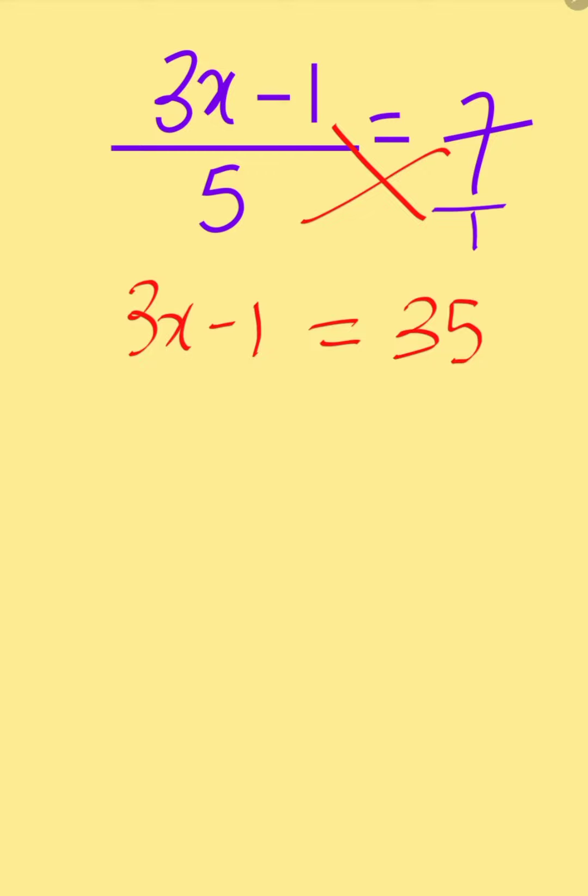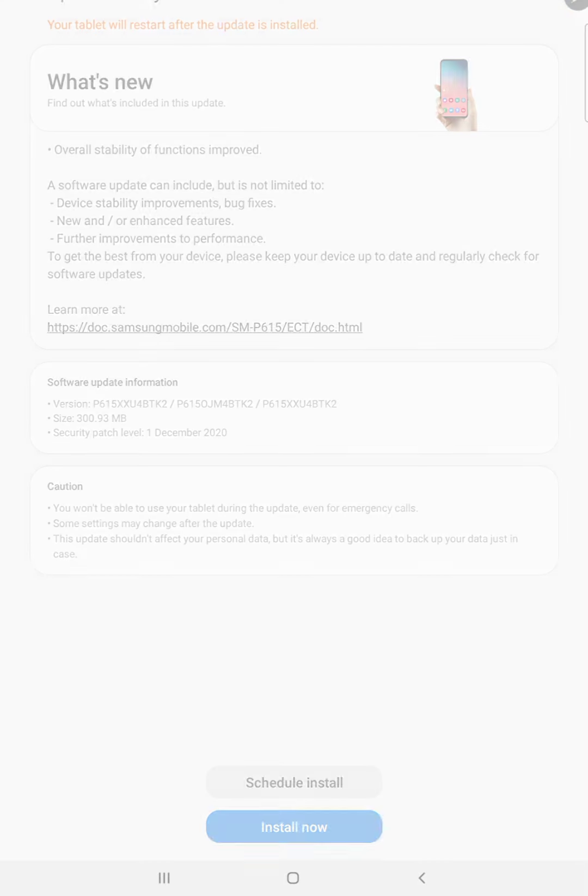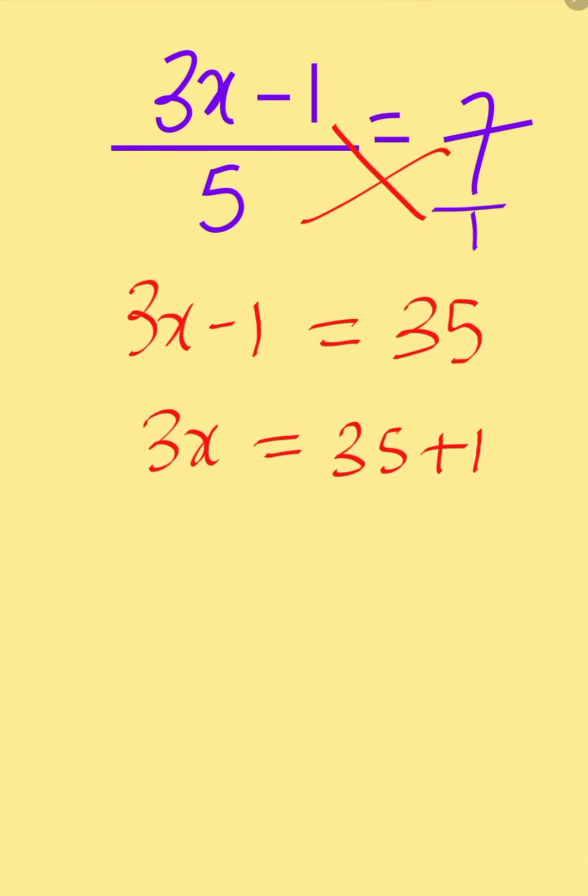Now to solve this, the minus 1 will come to the right hand side and when it comes to the right hand side, it will turn to plus 1. When you add 35 and 1 together, you are going to get 36.